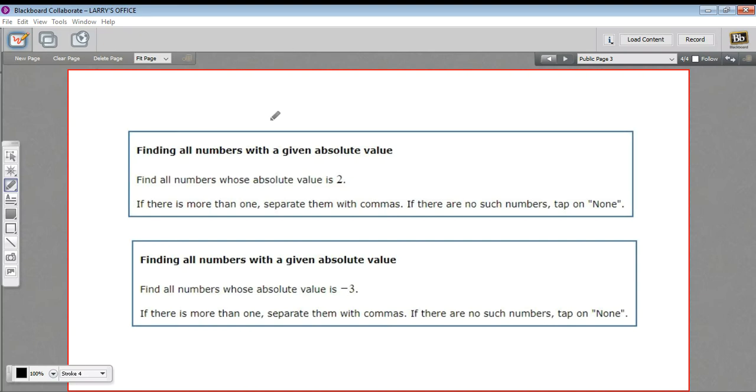When you take the absolute value of a number, let's say we wanted the absolute value of negative 2, what you give is just the number part without the sign, and it's always a positive value.